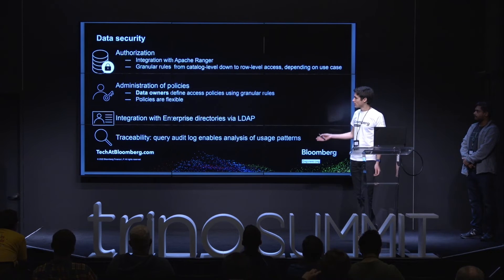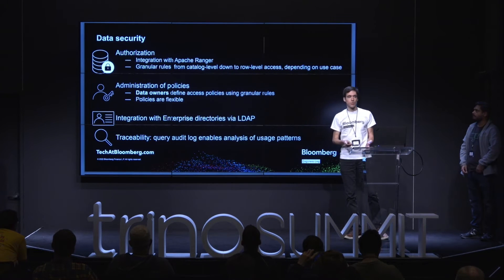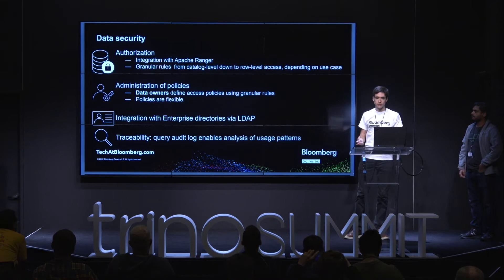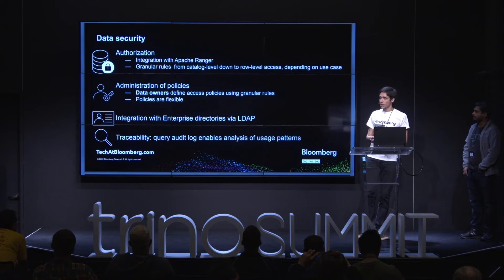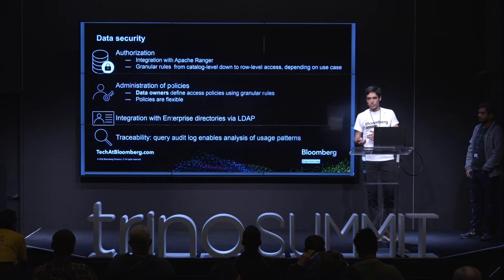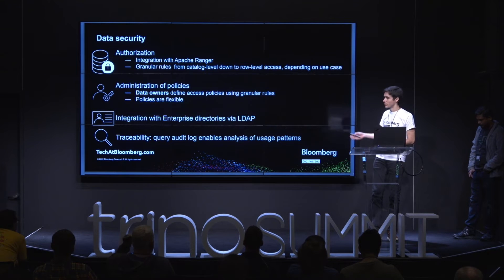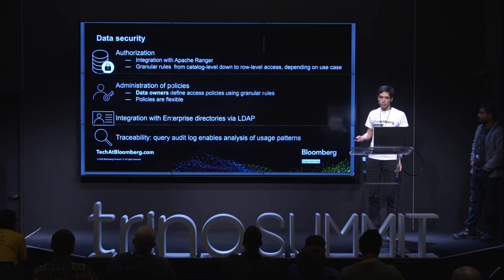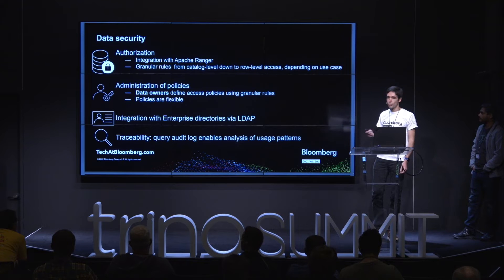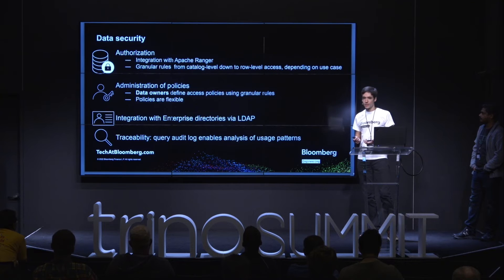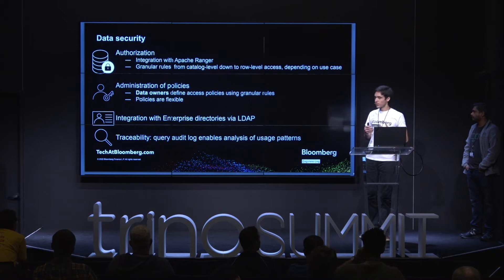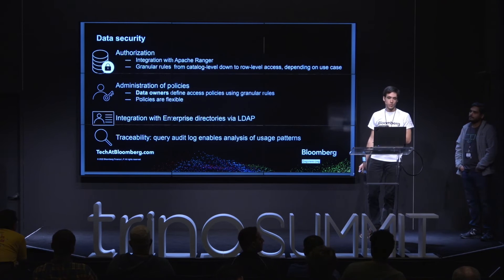High availability is only one of the requirements. We also have authorization, for which we run Trino together with Apache Ranger to determine what catalogs each user can access. These rules can be granular — from allowing access to an entire catalog, down to the row level. Importantly, policies are managed by the data owners, not by our team, since we just maintain the platform.